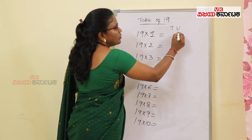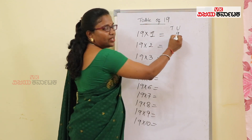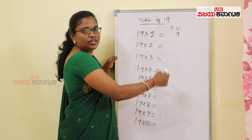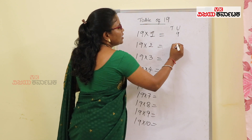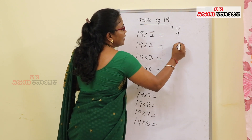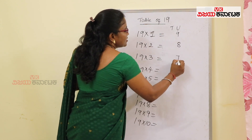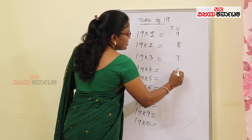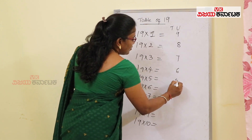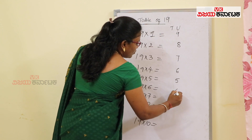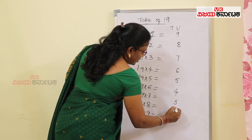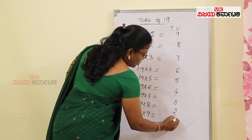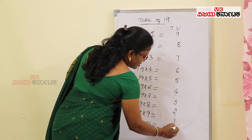Let's start from 9. At 19×0, it will be in reverse order. So that is 9, 8, 7, 6, 5, 4, 3, 2.